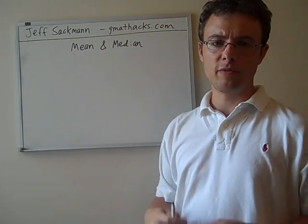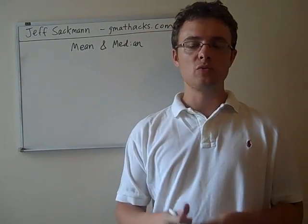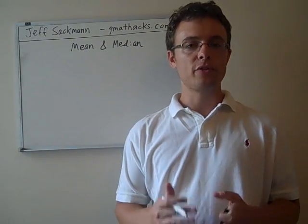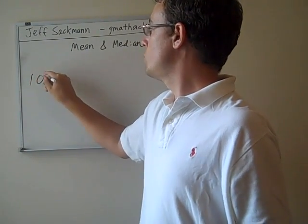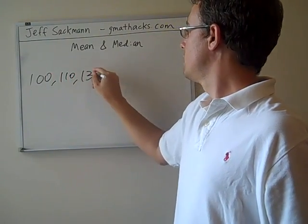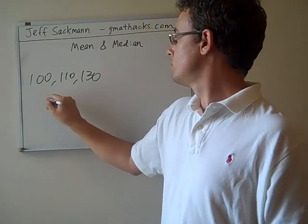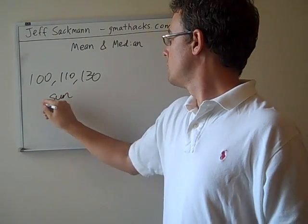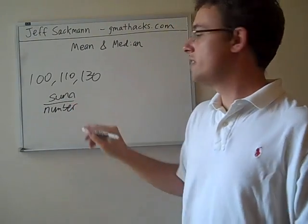The mean is the one you're probably familiar with, the one that you use on a daily basis. So if you go bowling, you bowl three games and you come up with your average, all you're doing is you're taking the three numbers—let's say 100, 110, and 130—you're taking those three numbers, you're adding them up, and then you're dividing them by the number of terms.